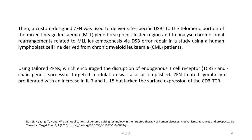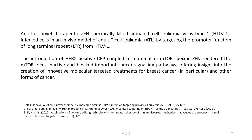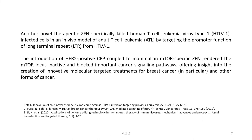A custom-designed ZFN was used to deliver site-specific double-strand breaks to the telomeric portion of the mixed lineage leukemia gene breakpoint cluster region and to analyze chromosomal rearrangements related to MLL leukemogenesis via DSB error repair in a human lymphoblast cell line derived from chronic myeloid leukemia patients. Using tailored ZFNs which increased disruption of endogenous T cell receptor and chain genes, successful targeted modulation was accomplished. ZFN-treated lymphocytes proliferated with an increase in interleukin-7 and interleukin-15, but lacked surface expression of the CD3-TCR. Another ZFN specifically killed human T cell leukemia virus type 1 infected cells in an in vivo model of adult T cell leukemia by targeting the promoter function of the long terminal repeat from HTLV-1.